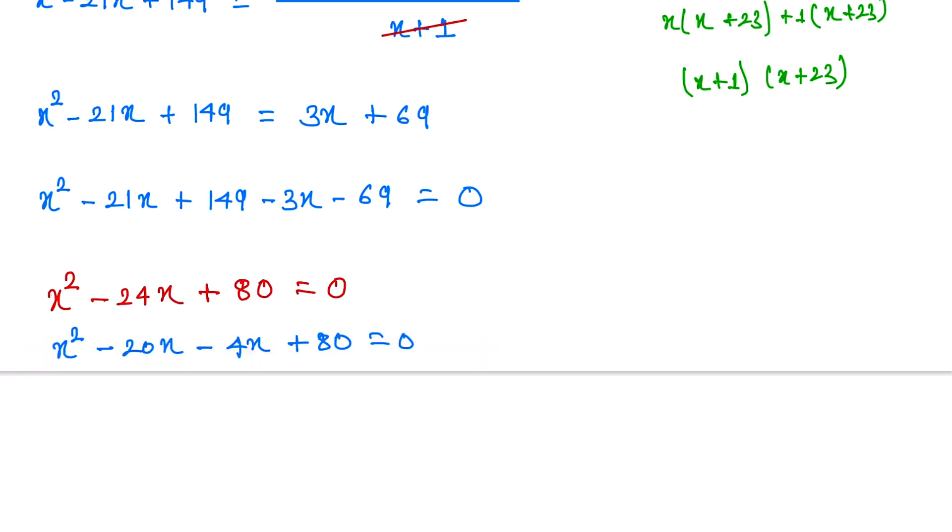Plus 80. Now we take the common x, here is x(x - 20), and here is -4(x - 20). So (x - 4)(x - 20).